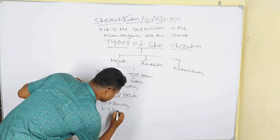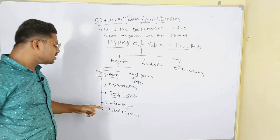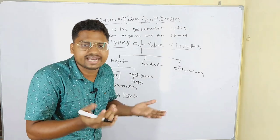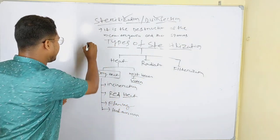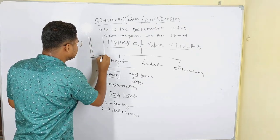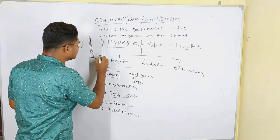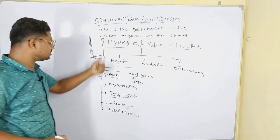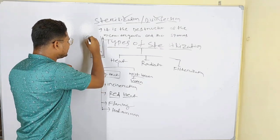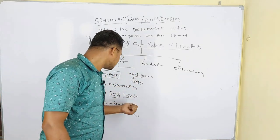The fourth type of dry heat sterilization is the hot air oven. We have to use hot air for the purpose of sterilization. We put the materials inside the oven and hot air is passed through — that process is called the hot air oven.